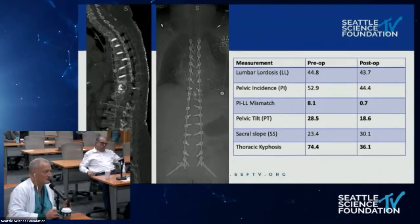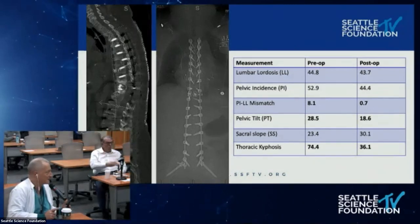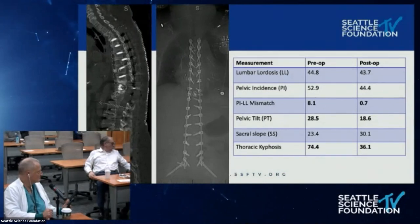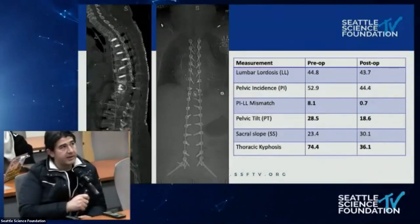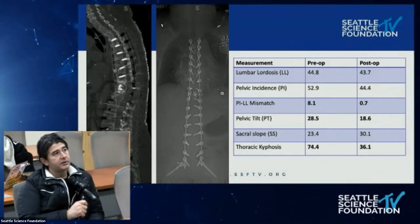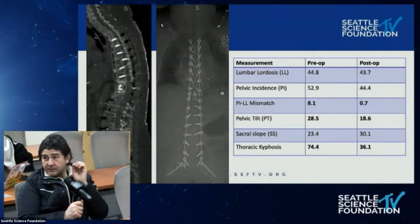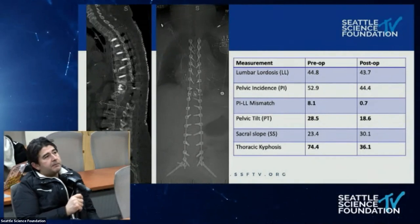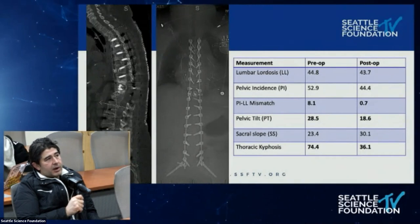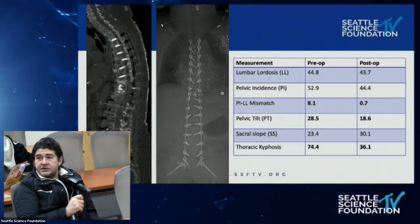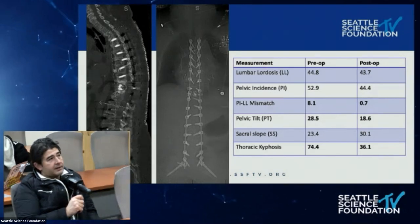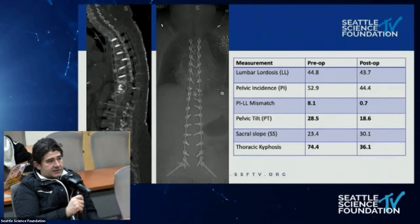Dr. Oskuyan comments that the pre-bent rod made a big difference: usually requiring in-situ contouring and reducers at the top, but in this case the rod dropped in perfectly. Good fixation is also challenging — this patient had very small pedicles at the thoracic levels. Chapman asks why such small pedicles occur. Hart explains the thoracic pedicles can be very diminutive — genetically programmed — and surgeons have learned to use extrapedicular screws using the in-out-in technique, working lateral to the pedicle rather than fully cannulating it.